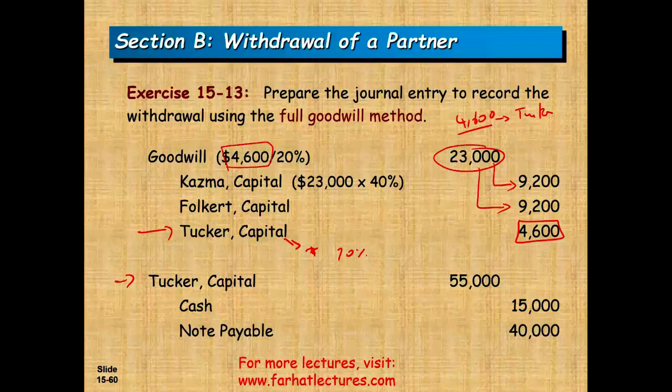To summarize the full goodwill method: Tucker is getting $4,600 more, and since he's a 20% owner, it means the company must be worth $23,000 more in total goodwill. The $4,600 goes to Tucker, and under the full goodwill method the other partners also absorb their share of the goodwill to increase their capital balances.